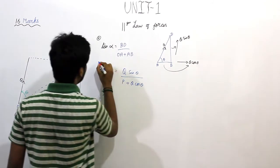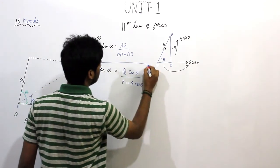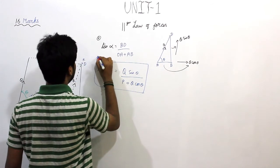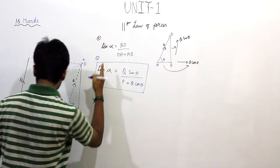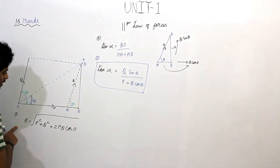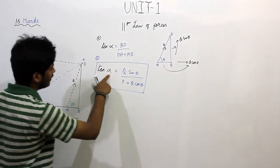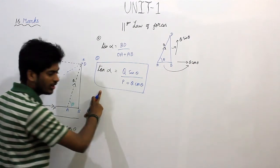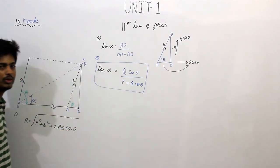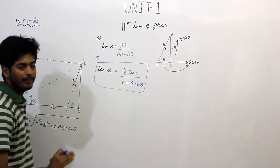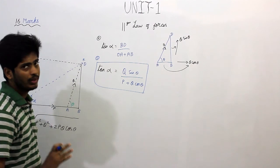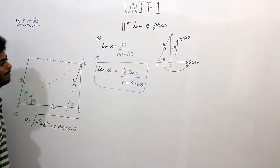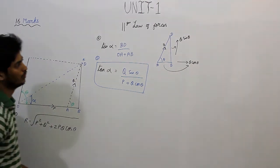This gives us an easy formula — the tan alpha formula. This is the second formula and it is important. The first formula is r equals root of p squared plus q squared plus two pq cos theta, and the second formula is tan alpha. We will use these to solve problems.